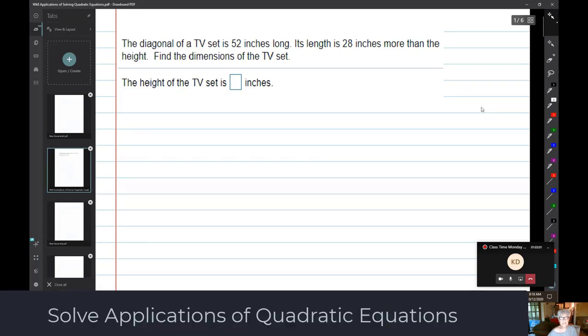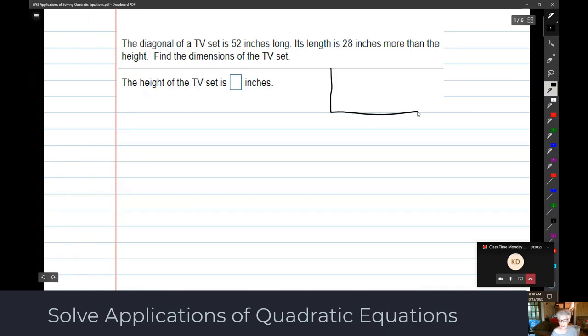The diagonal of a TV set is 52 inches long. Its length is 28 inches more than the height. Find the dimensions of the TV set. Always draw a picture with these - makes them so much easier. There's the diagonal of the TV set, 52 inches long. Now here's the length and here's the width. The length is 28 inches more than the width, the height rather.